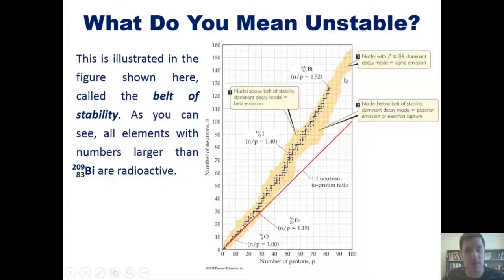Generally speaking, if you're above this belt of stability, these blue dots, these are isotopes that will have a preferred mode of decay be beta emission. As you get nuclei that have atomic numbers above 84, the dominant decay mode is alpha emission.